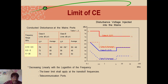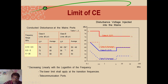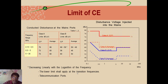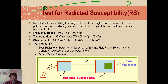For CE limits, different standards and values are given for Class A and Class B, along with average values. Class A conducts in the order of 70 microvolts for different frequency ranges, with the average slipping down to 60. For Class B, the values are in the order of 60, with the average slipping down to 50 microvolts. The limit decreases linearly with the logarithm of frequency. The lower limit applies for transition frequencies. Telecommunication ports are the main example of conducting ports where transition frequencies are important.